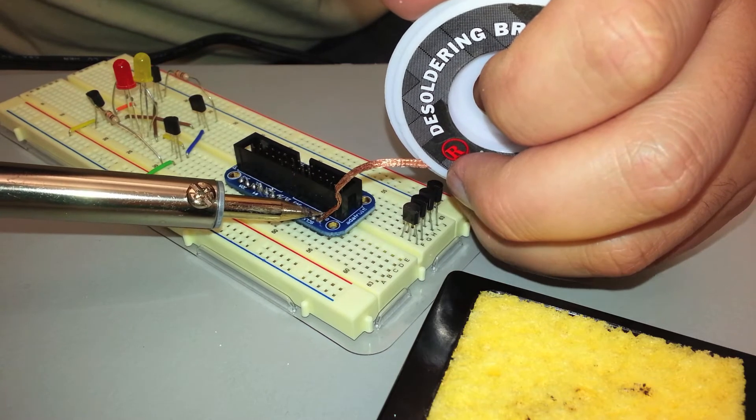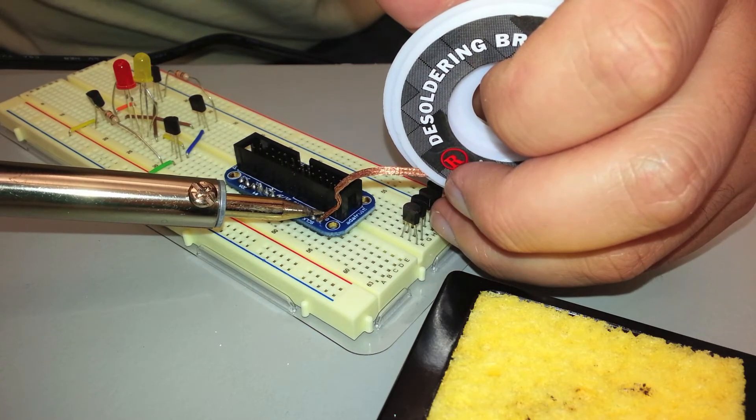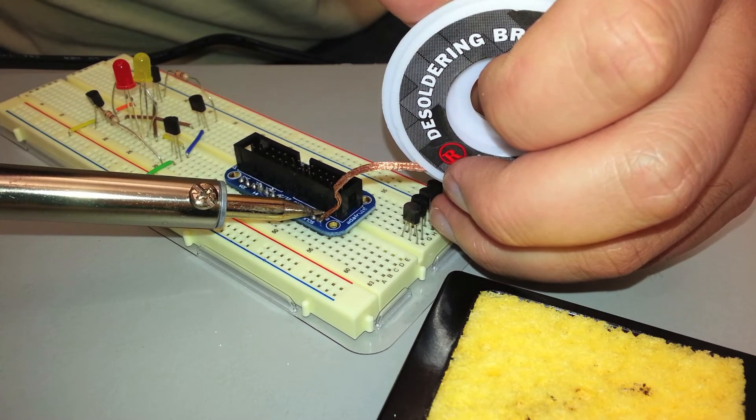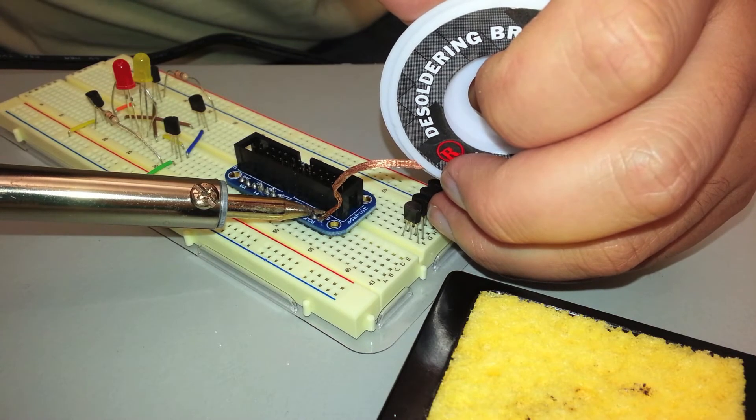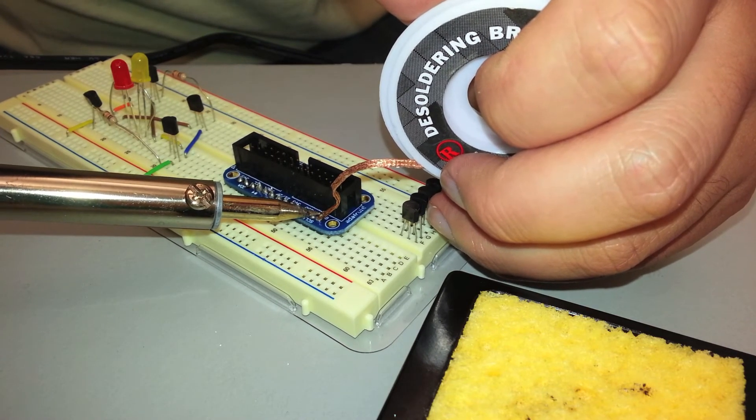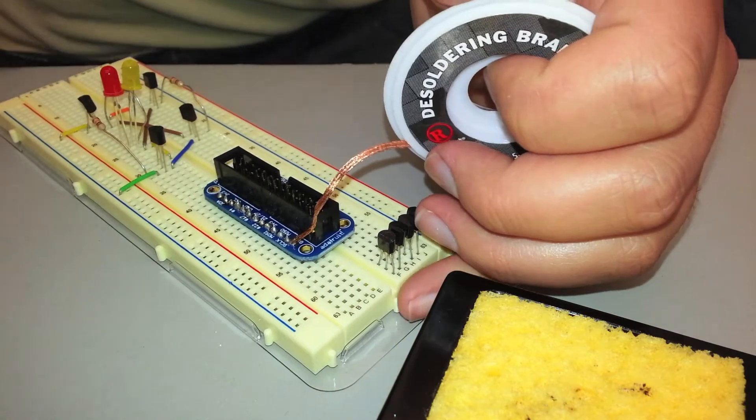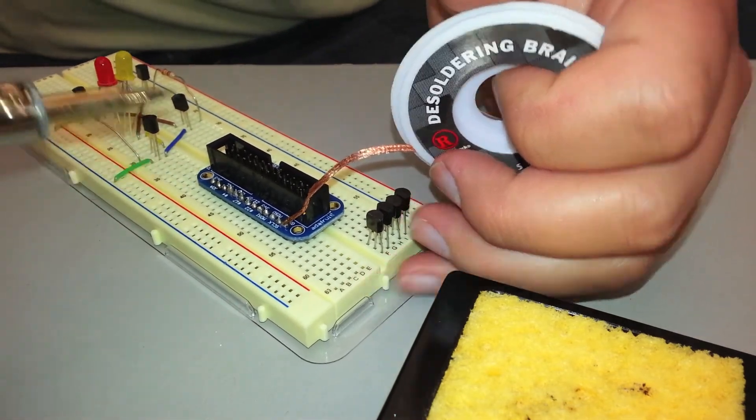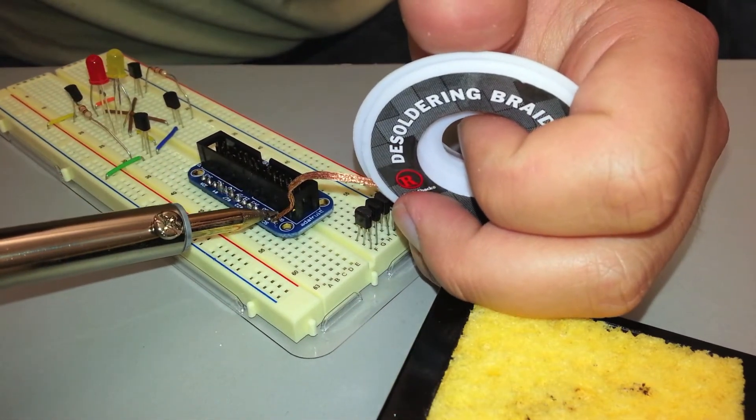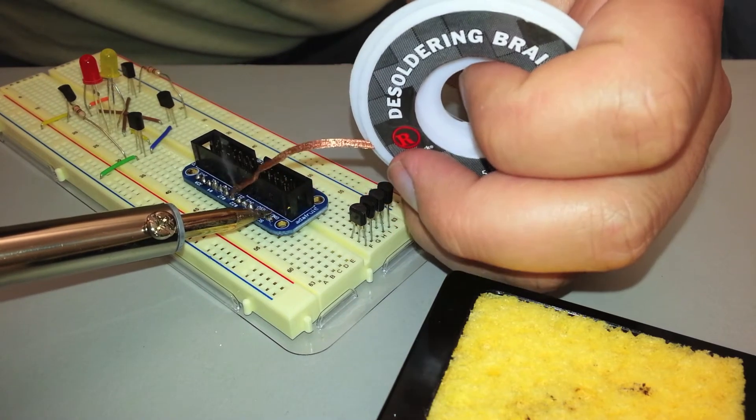If it gets stuck, just heat it up again and then remove them both at the same time. You can see here it's getting hot and as it gets hot it'll just absorb all the excess solder and you can go back and re-solder it if you want. And this one is done.